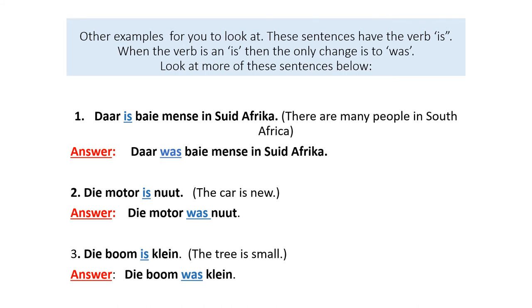Other examples for you to look at. Now children, these sentences have the verb 'is'. When the verb is 'is', then the only change is to 'was'. Look at more of these sentences below.